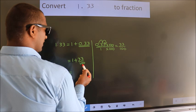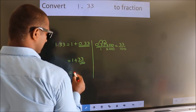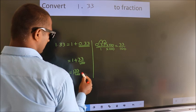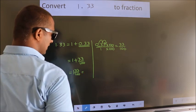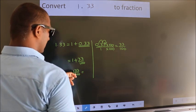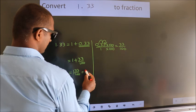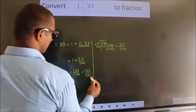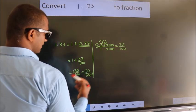So 1 plus 33 by 100. In mixed fraction, it is 1 33/100. In improper fraction, it is 1 into 100, 100 plus 33. 133 by 100 is our fraction.